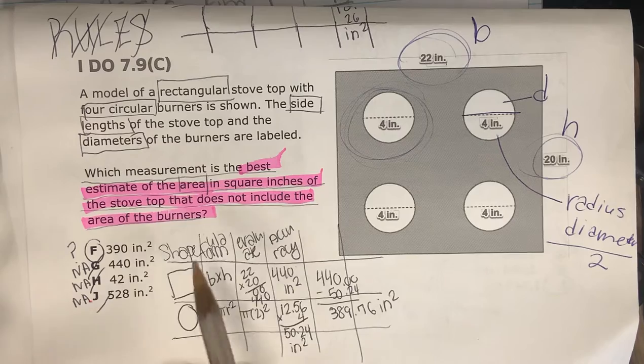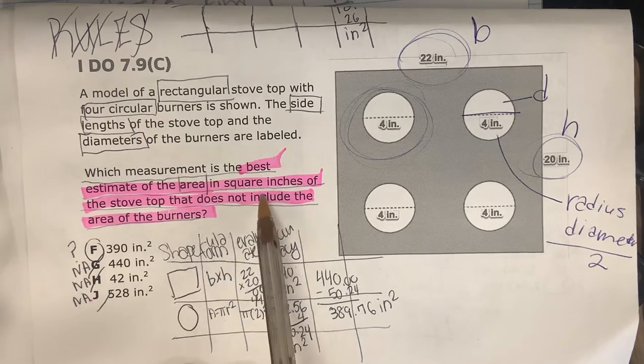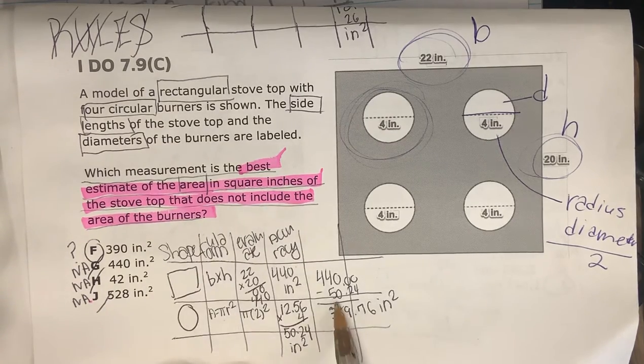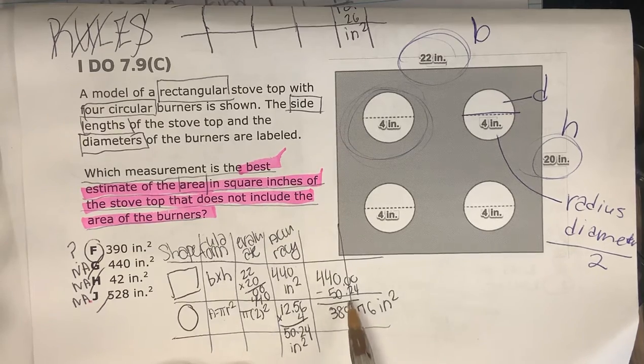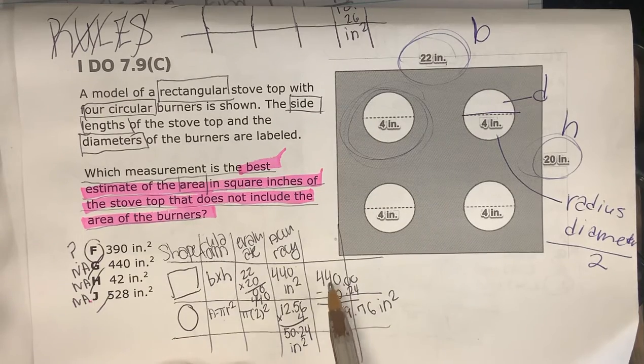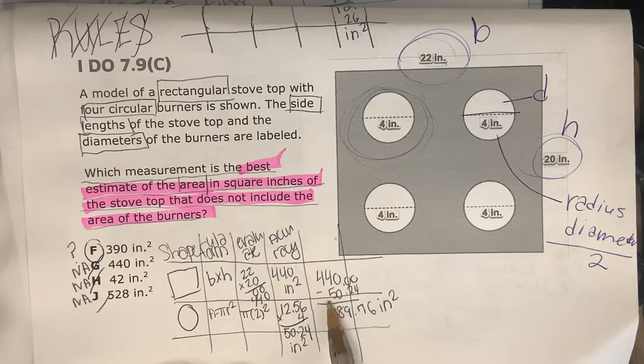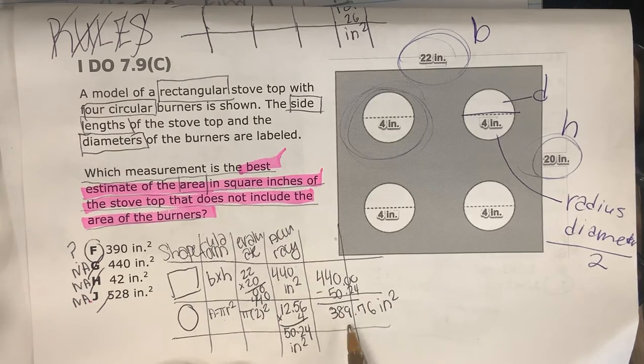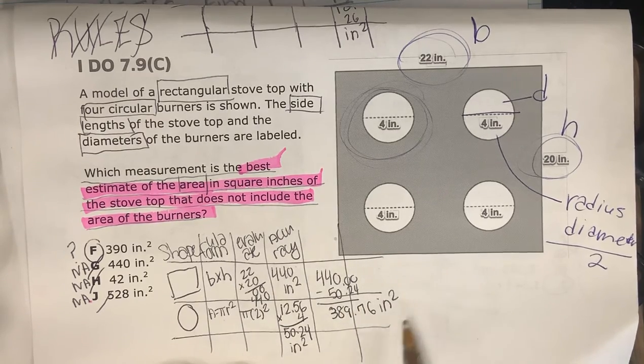Now it says the area of the stove top that does not include the area of the burners. So I have to subtract the area of the four combined burners, 50.24, from the area of the stove top, which is 440. So 440 minus 50.24 is 389.76 inches squared, approximately. That's closest to answer choice F.